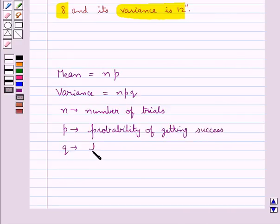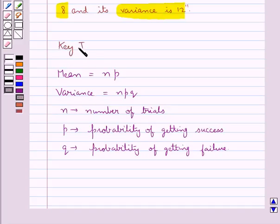And q is the probability of getting failure. This is the key idea that we use for this question. Now we move on to the solution.